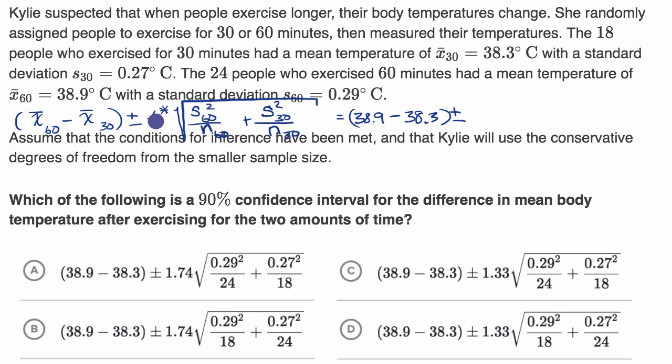Now how do we figure that out? Well, we can use our 90% confidence level that we care about, this 90% confidence interval, but if we're looking up things on a T table, we also need to know our degrees of freedom. And it says here that Kylie will use the conservative degrees of freedom. And that means that she will look at each of those samples, so one has a sample size of 18, one has a sample size of 24,